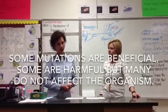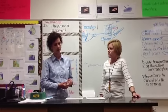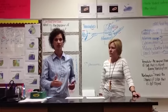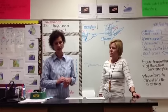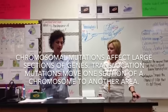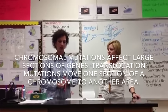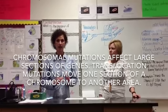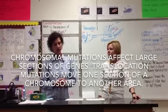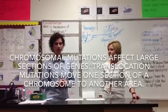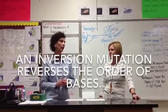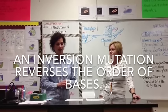Now let's talk about chromosomal mutations. Chromosomal mutations affect really large sections of genes — lots and lots of genes, not just one base in the DNA. One type is a translocation, where a section of a chromosome moves to another area and changes the order of the bases. An inversion mutation is a type of translocation where it reverses the order of the bases. I will draw this out on a slide so you can see it.